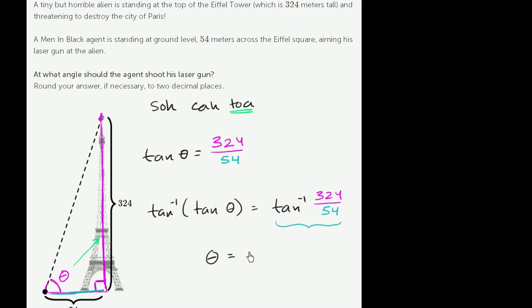And so we get theta is equal to inverse tangent of 324 over 54. Once again, this inverse tangent thing you might find confusing. But all this is saying is, my angle is whatever angle I need so that when I take the tangent of it, I get 324 over 54. It's how we will solve for theta.